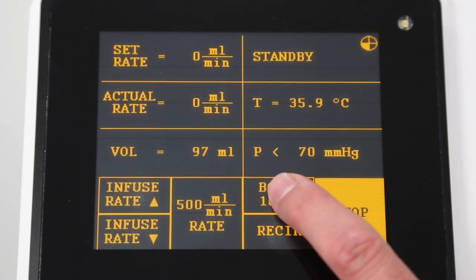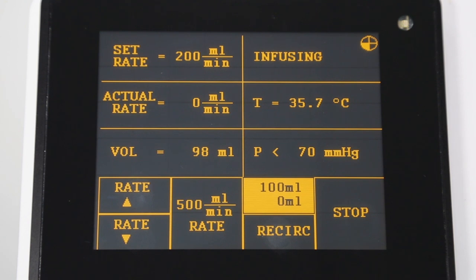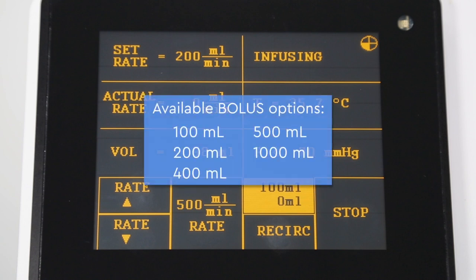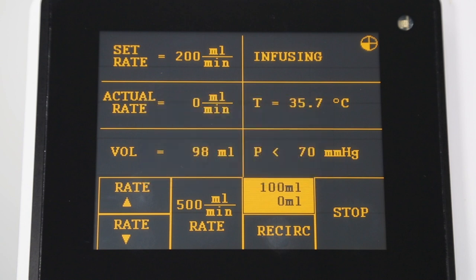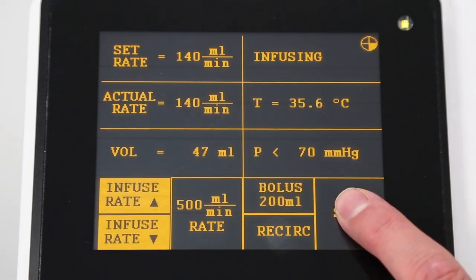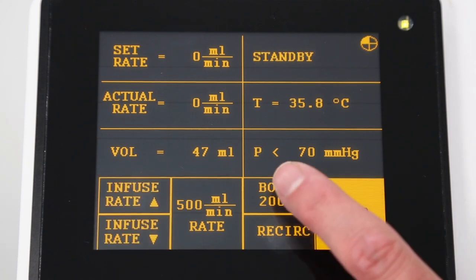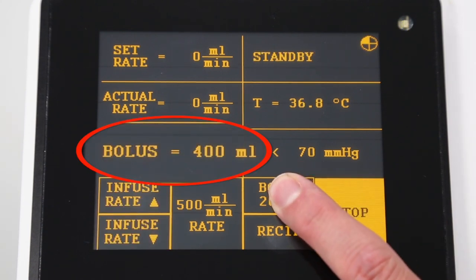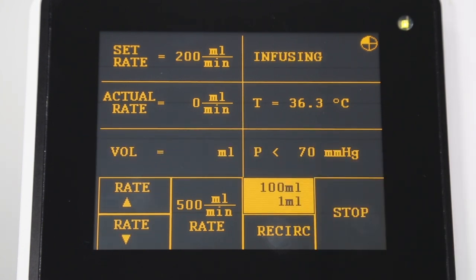Pressing the bolus key will deliver a specific volume of fluid. The volume delivered will be displayed on the lower half of the bolus key until the bolus operation is complete. Available bolus options are 100, 200, 400, 500 and 1000. To change the bolus settings, press stop and then press and hold the bolus key to scroll through the different values. When the desired bolus volume is displayed, simply release the bolus key.